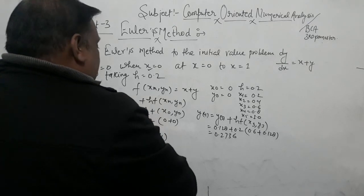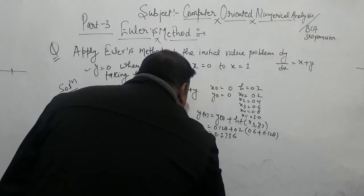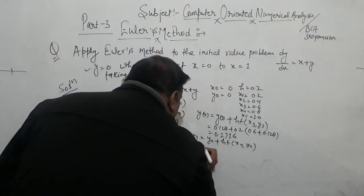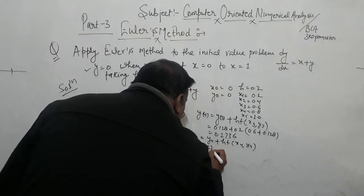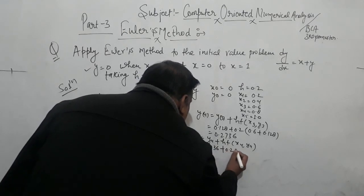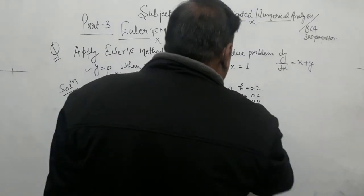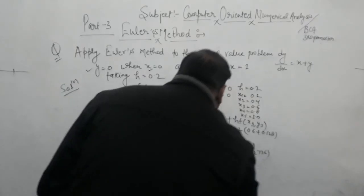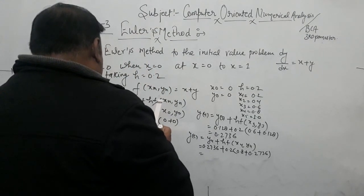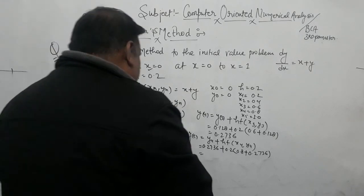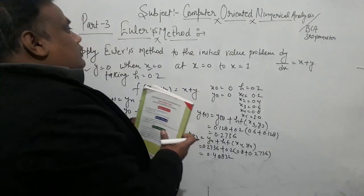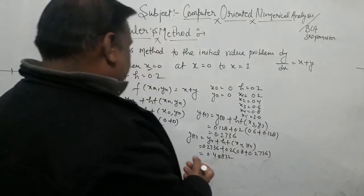y5 = y4 plus h·f(x4, y4). y4 is 0.2736, plus 0.2, and x4 is 0.8, plus y4 is 0.2736. So we can solve this and get y5 = 0.48832.